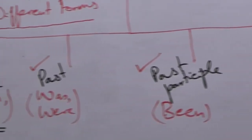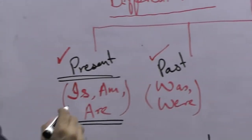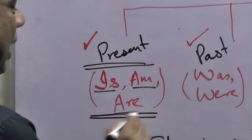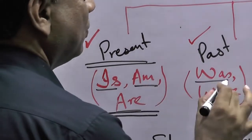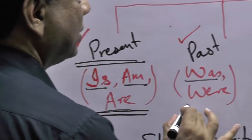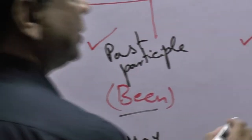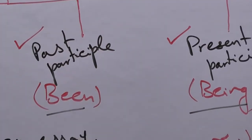Looking at the present forms of 'be', these are: is, am, are. The past form is was or were. The past participle is 'been'. The present participle is 'being', which indicates continuity.